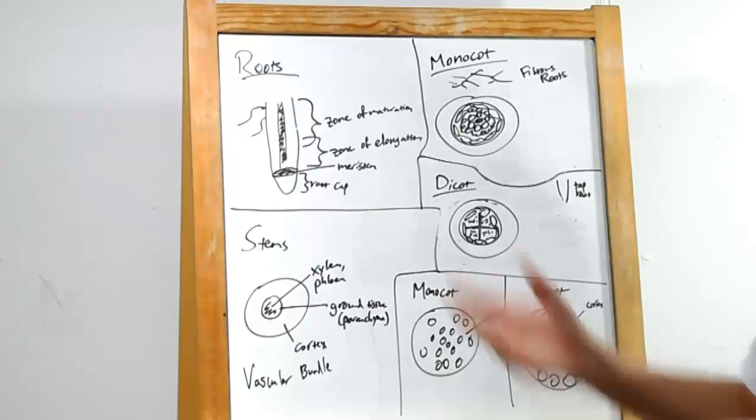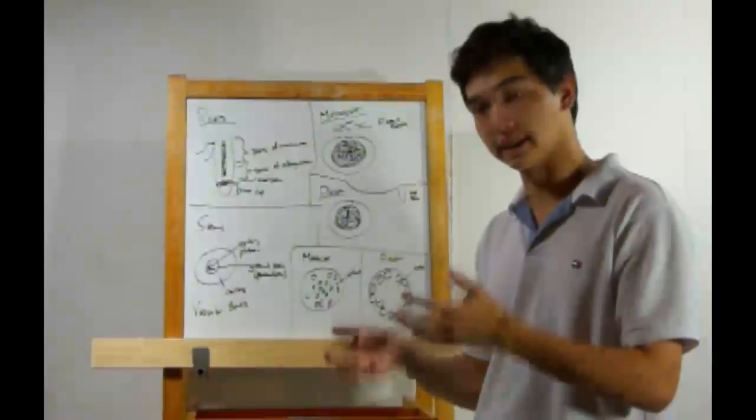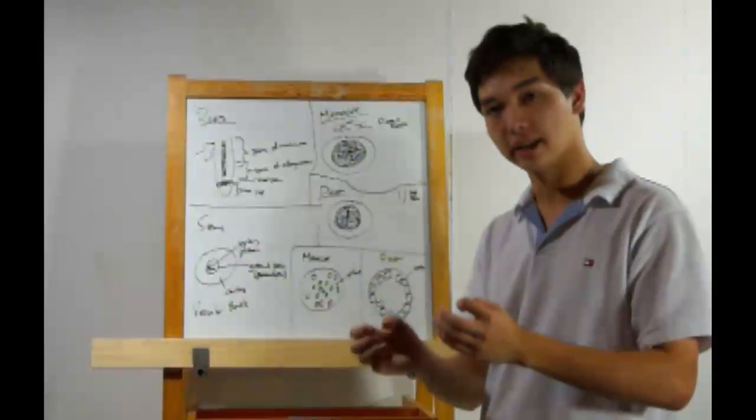Immediately above the zone of elongation, we have the zone of maturation. When cells are far enough from the meristem, they start maturing and getting their own particular job. They'll become parts of the xylem, the phloem. Maybe they'll add to the parenchyma, which is going to provide extra support and storage. Maybe it'll help protect the root with the endodermis. Maybe it'll even become a root hair and help absorb extra water and nutrients.